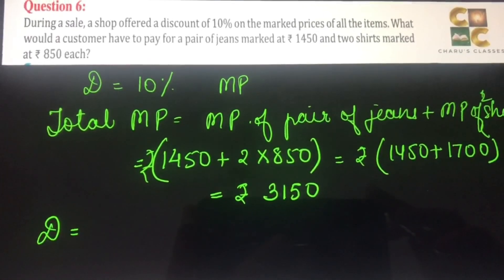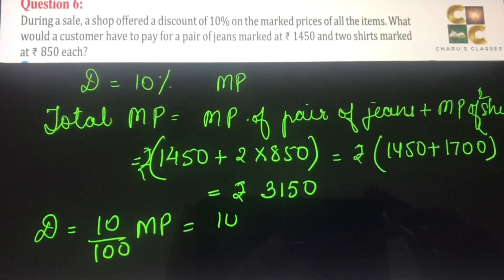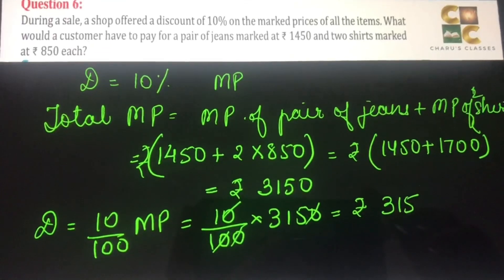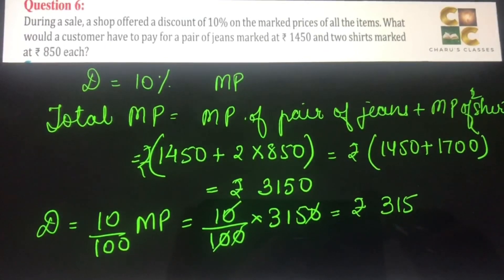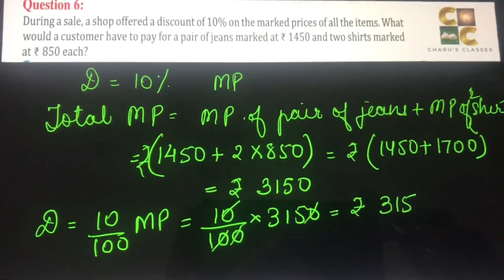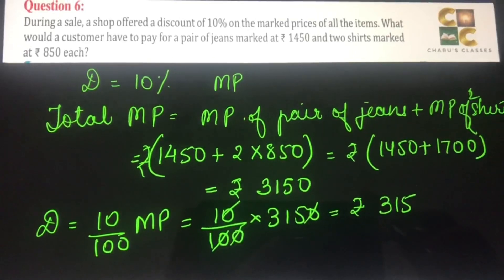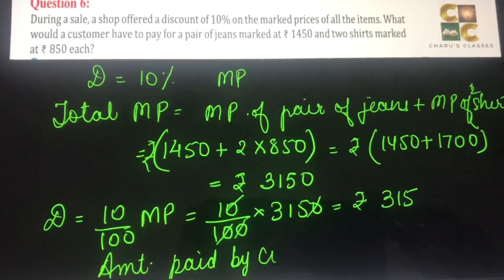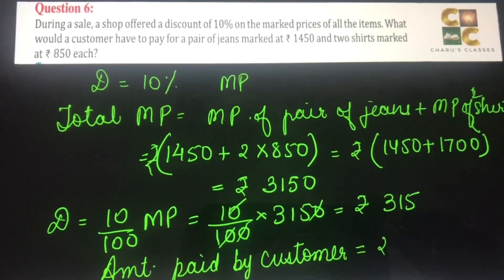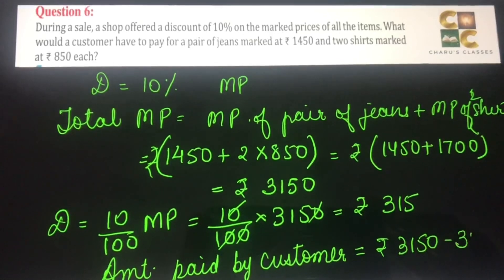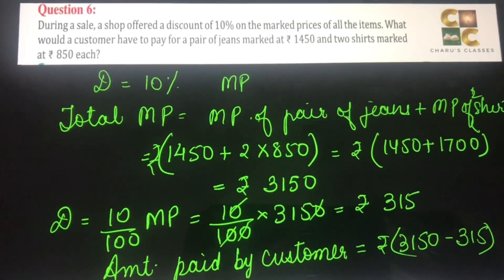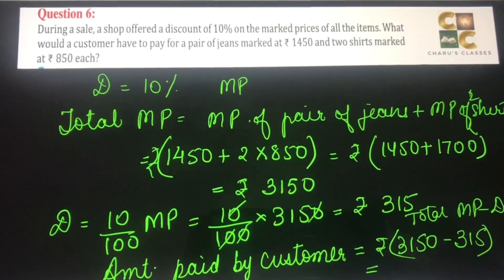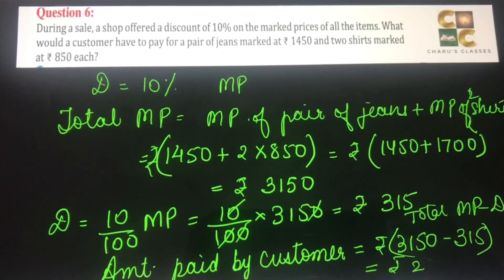Discount is equal to 10% of the mark price, that is 10% of 3150, which is rupees 315. Now the amount paid by customer is total marked price minus the discount, so rupees 3150 minus 315, which is rupees 2835. So the amount paid by the customer is rupees 2835.